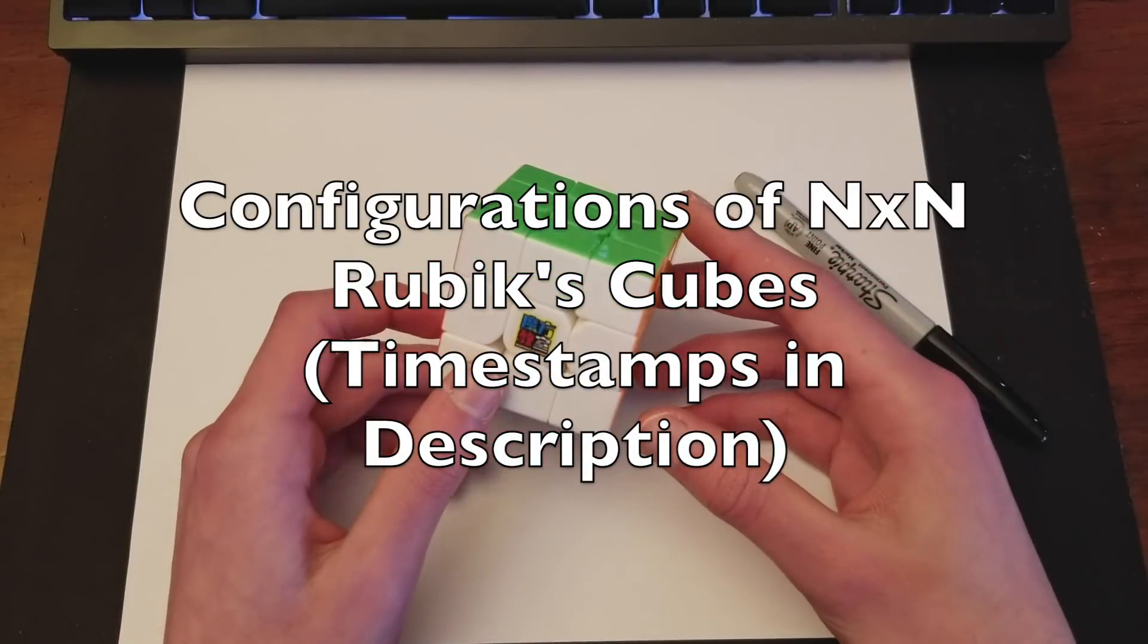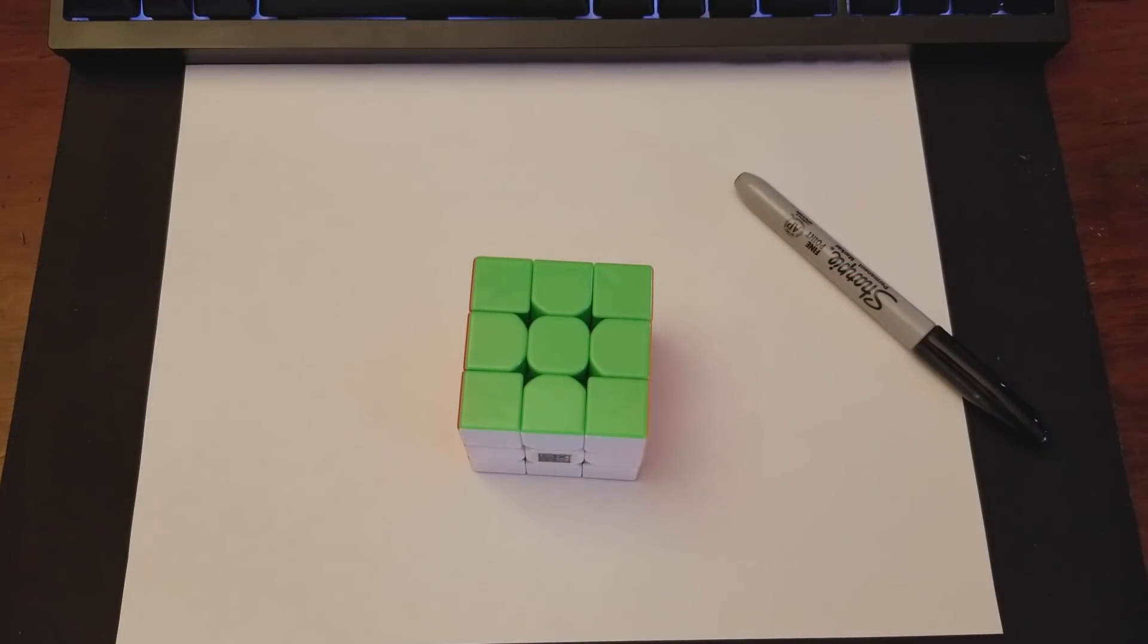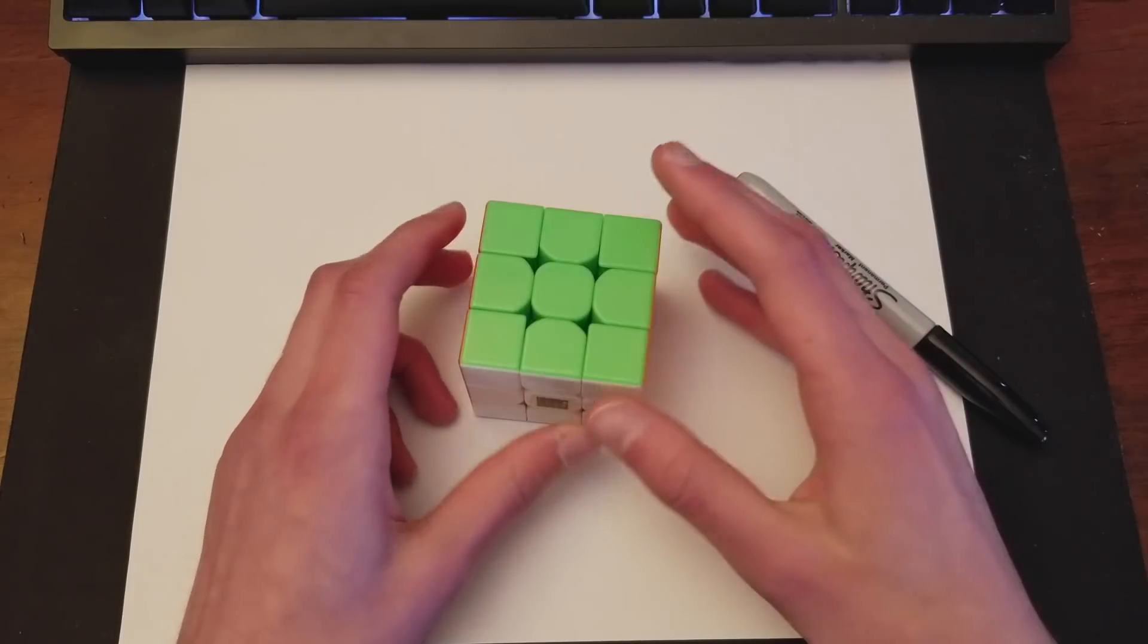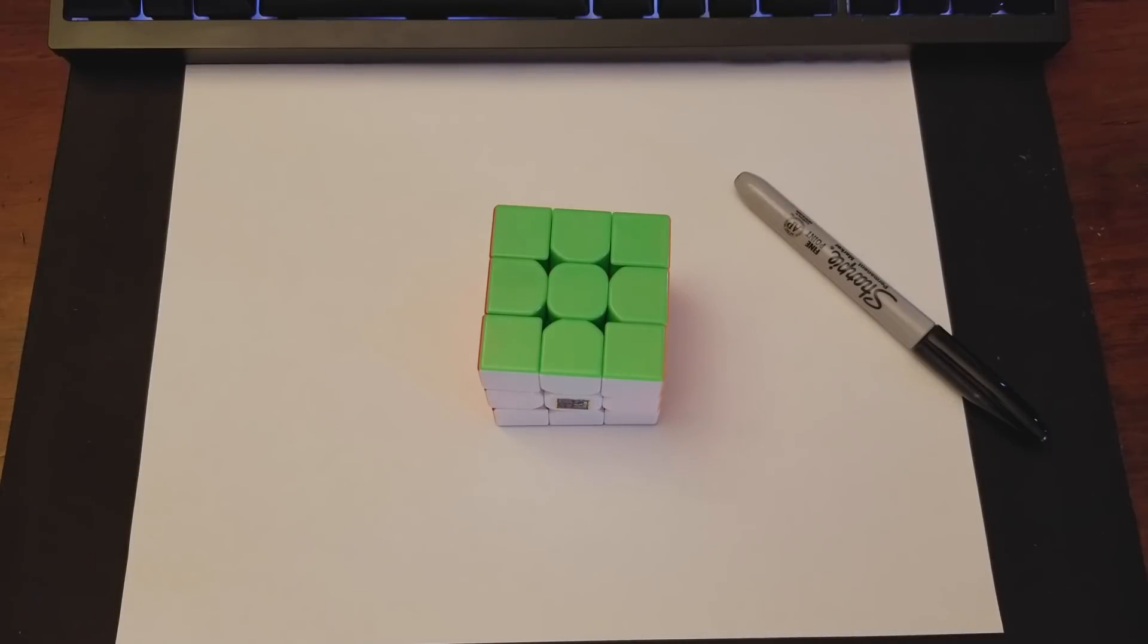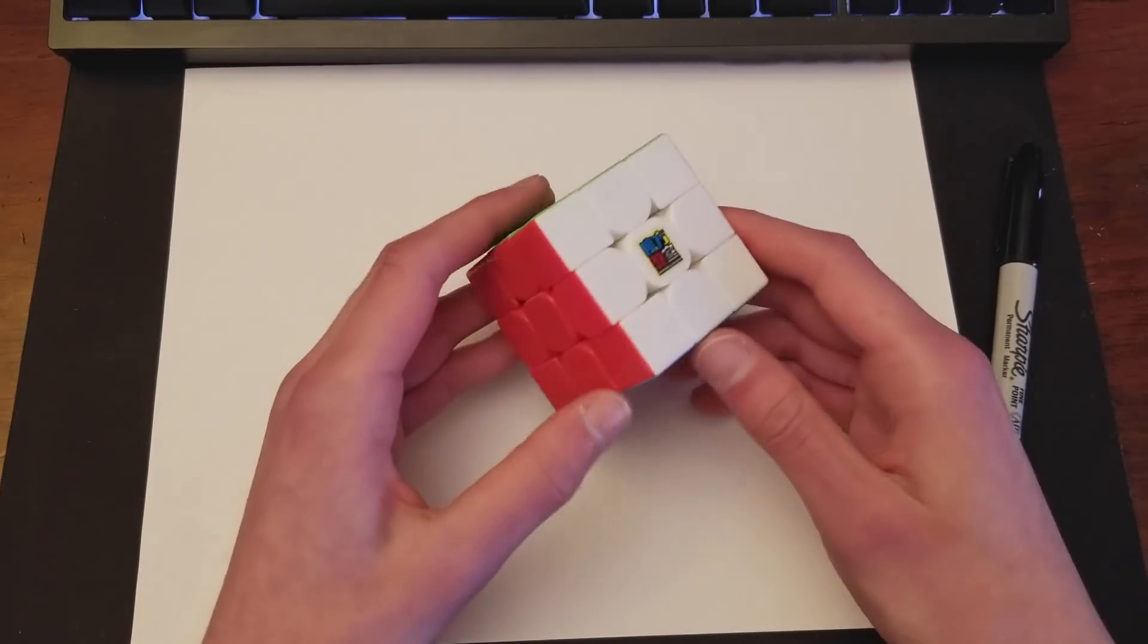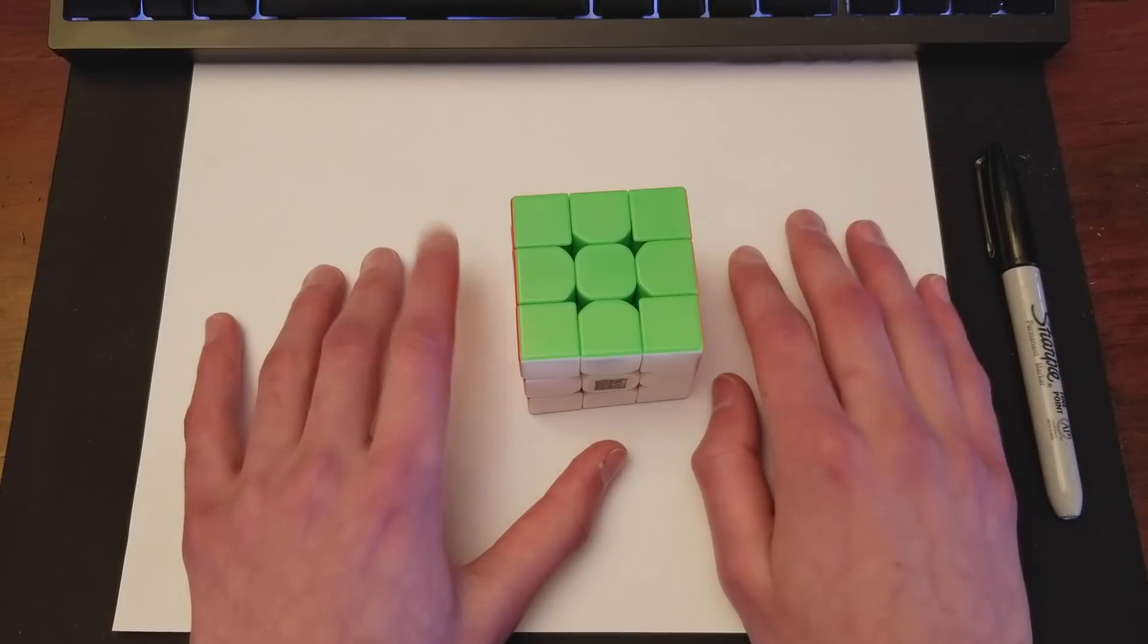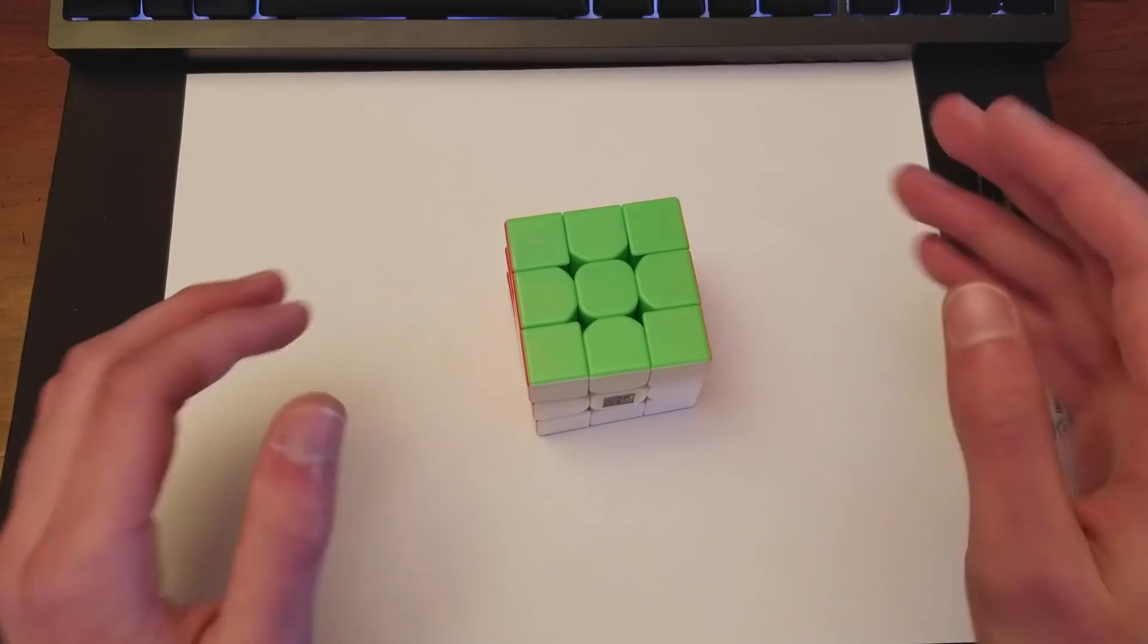Alright, what's up guys? This is Lucas here. So today I have quite an interesting topic to discuss and explain. It's the number of configurations of N by N Rubik's Cubes. So I'm sure you've heard the number 43 quintillion. Let's just get started.